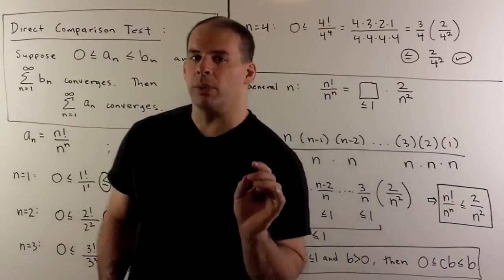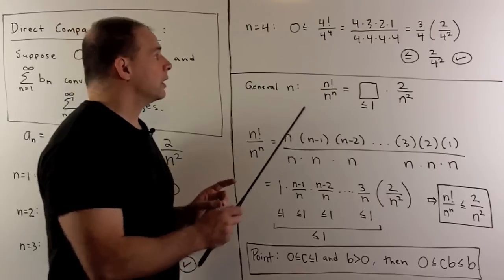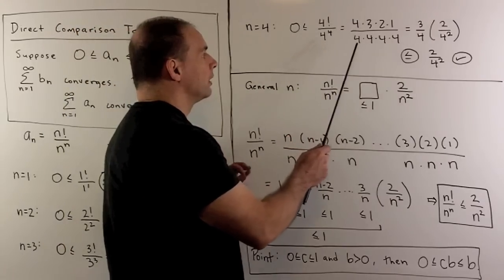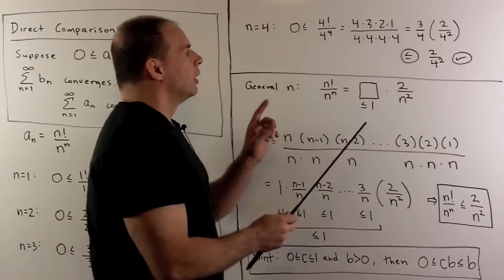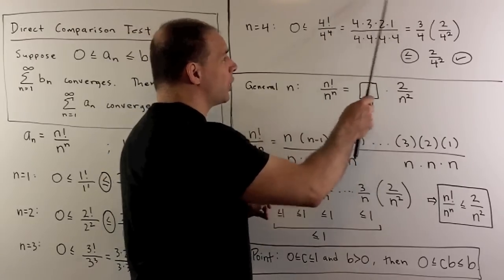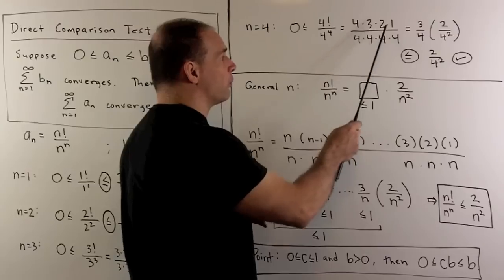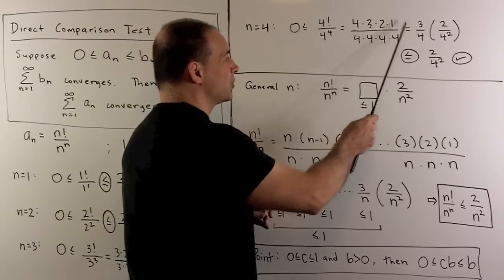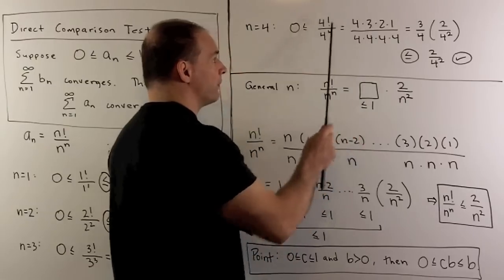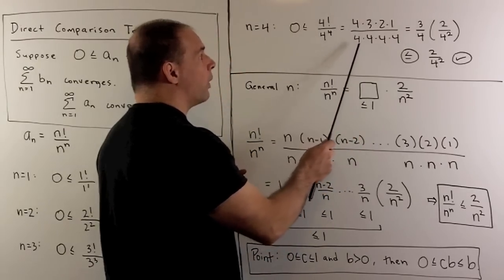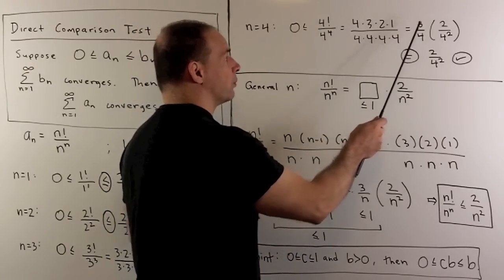We see something interesting when we get to n equal to 4. So if we write this out, we have 4, 3, 2, 1, over 4, 4, 4, 4. You'll note in the last two terms, I can write that as the fraction 2 over 4, 1 over 4. That's going to give us our 2 over 4 squared. For the terms in front, 4s go away, and I have a 3 over 4, so we have 3 fourths, 2 over 4 squared.